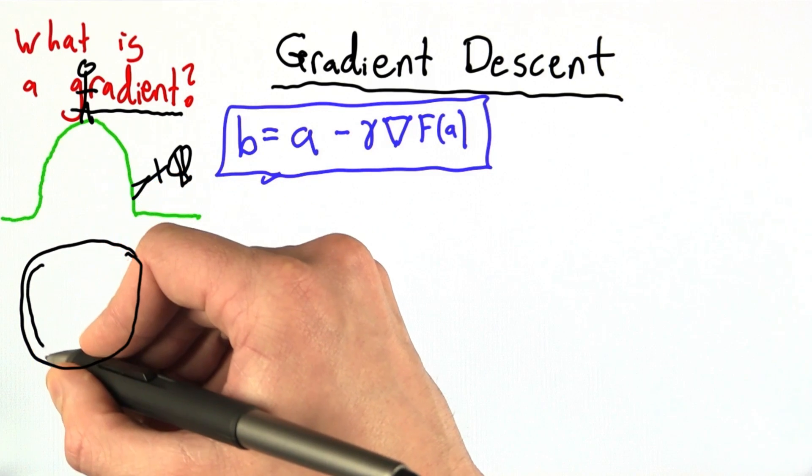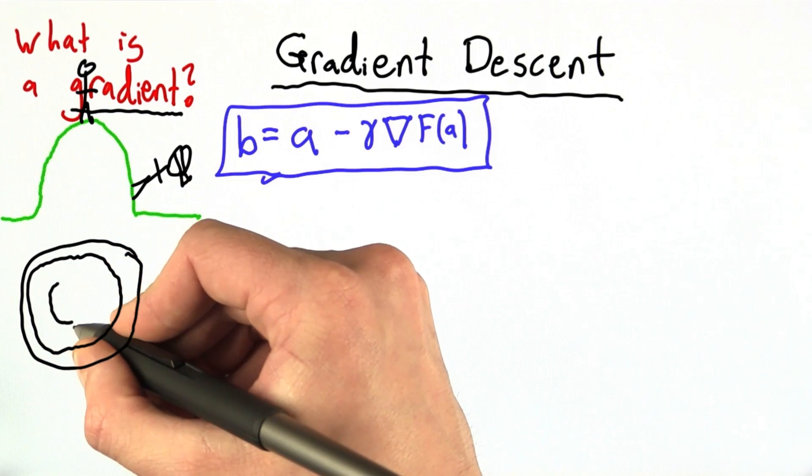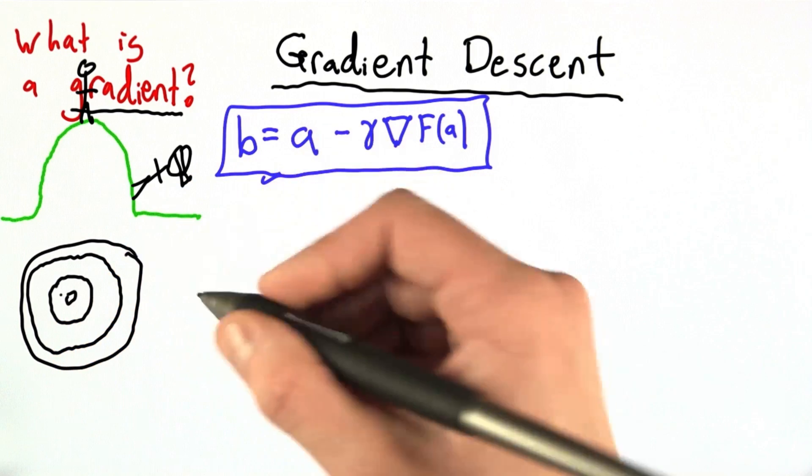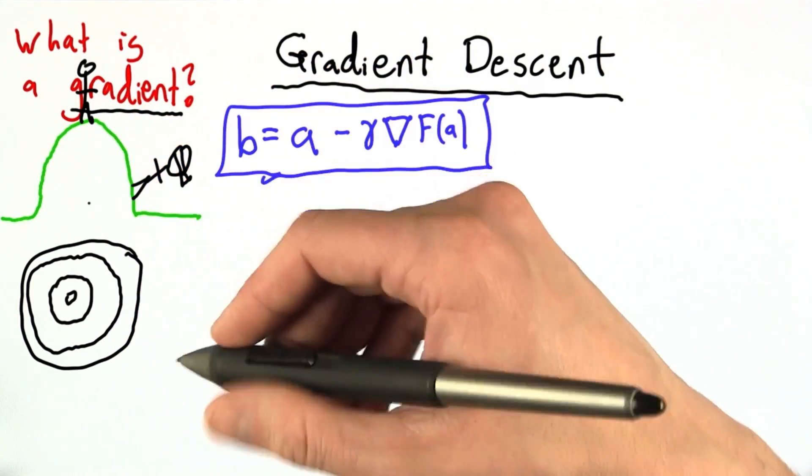So these lines all represent lines of the same altitude. And we can see they come together, they're really close together in the beginning, and become further and further apart as we go inside. And that's because the hill is getting less and less steep.